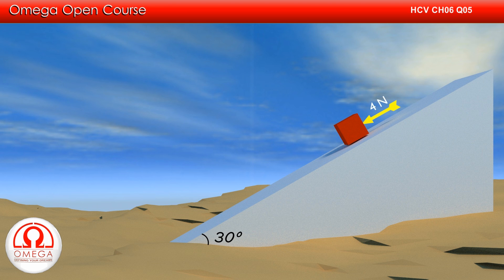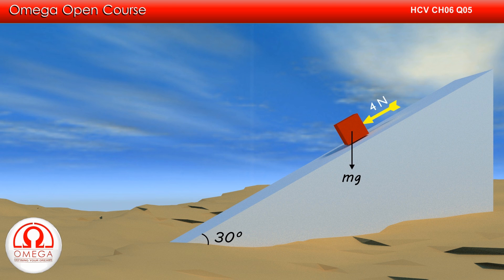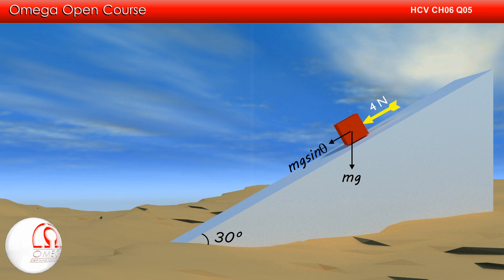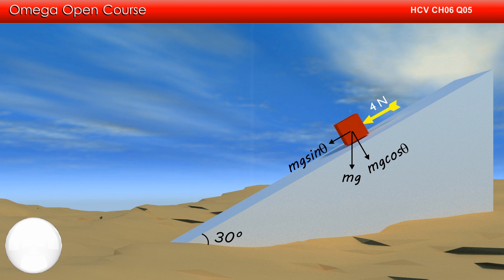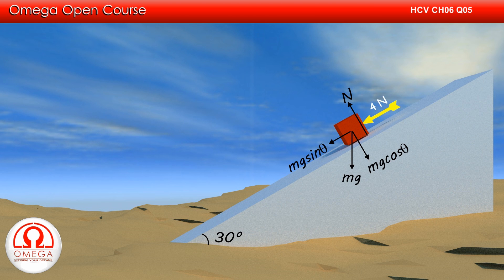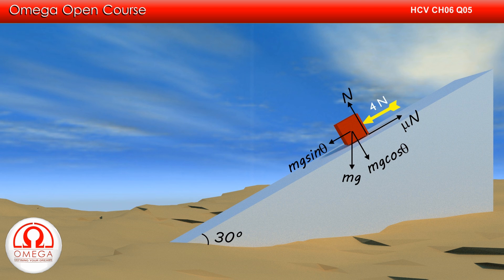Let us first draw the free body diagram of the block. Gravitational force Mg acts in the vertically downward direction. The component of gravity along the incline is Mg sin theta and perpendicular to the incline is Mg cos theta. Normal contact force from the incline acts perpendicular to the surface. A 4N force is pushing the block down the incline and kinetic friction of magnitude mu times normal acts up along the incline.